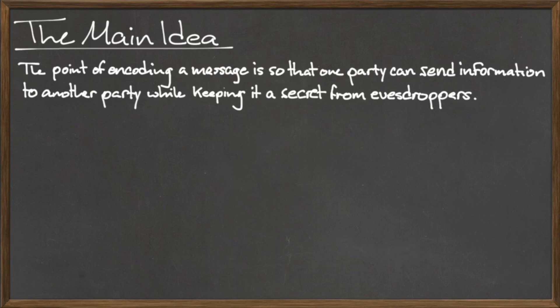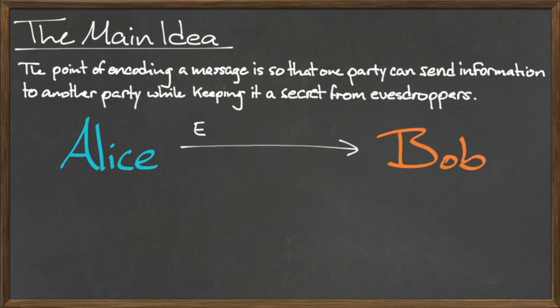To illustrate this, suppose that we had two friends, Alice and Bob, who wish to send messages to each other over a channel that is not secure. Because the channel they are communicating over is not secure,